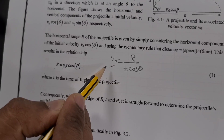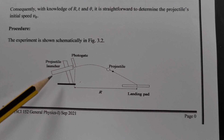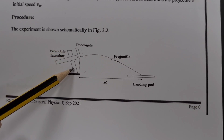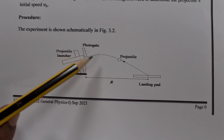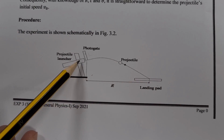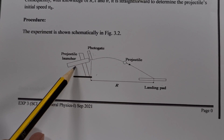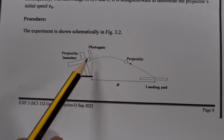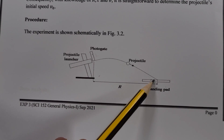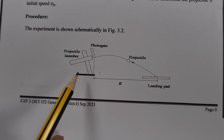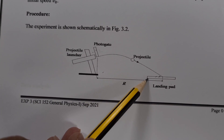Looking at the schematic diagram, the items we will use are: a projectile launcher, a photogate with a sensor attached, and a landing pad. Inside the projectile launcher we place the projectile and shoot it at different angles. We connect one timer box to the photogate and to the landing pad.